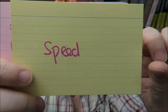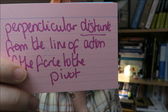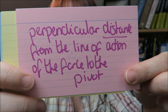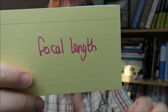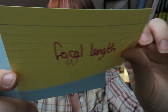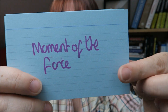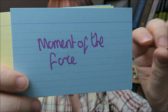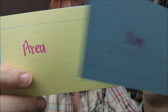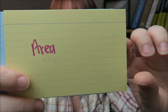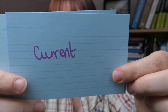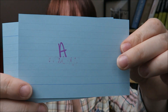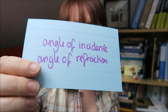Speed is measured in metres per second. Perpendicular distance to the direction of the force — metres. Focal length is measured in metres. Moments of the force is measured in newton metres. Area is measured in metres squared. Current is measured in amps. And angles are measured in degrees.